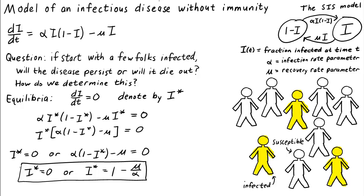After we calculate things like equilibria, we should do a reality check. Does our answer make sense? How about the zero equilibrium? Does i* equals zero make sense? Well, if we start off with zero infected individuals, it makes sense that an infection shouldn't start out of nowhere, because in our model, susceptible people get infected by contact with an infected person. So if the disease isn't present in the population, it will never get an infection.